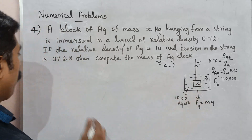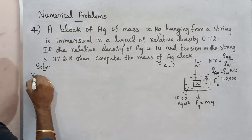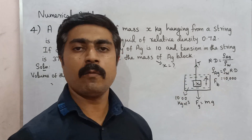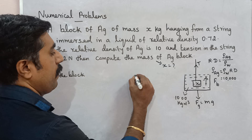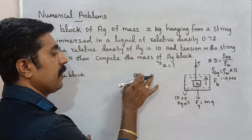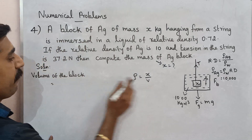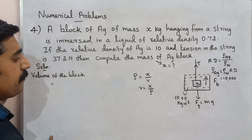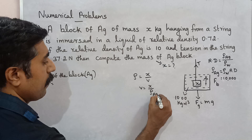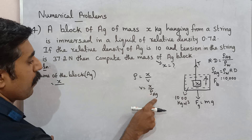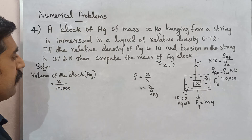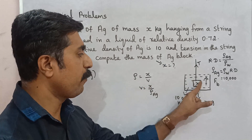Now, find the volume of the block. Since density equals mass divided by volume, volume of the silver block equals mass x divided by the density of silver, rho_ag, which is 10,000.